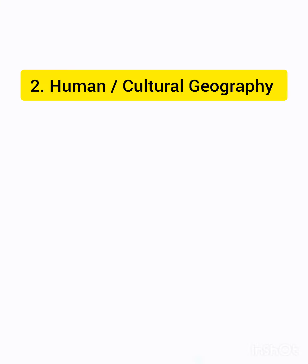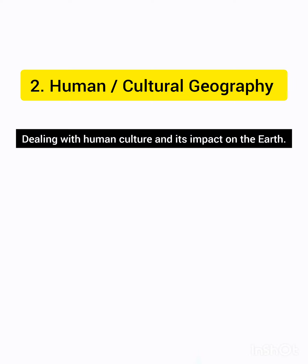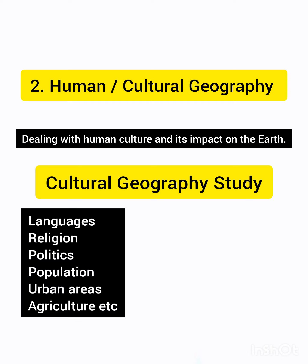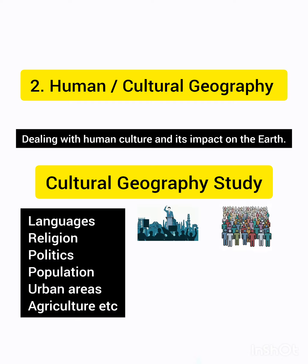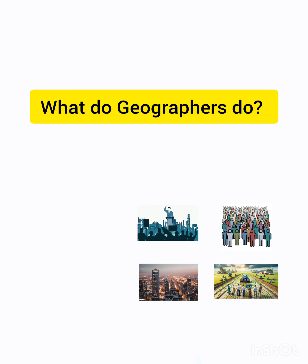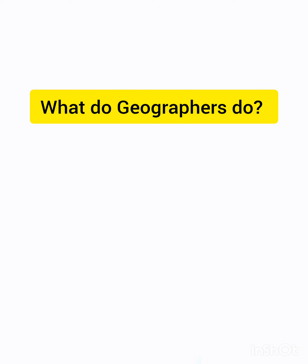The second branch of geography is known as human geography or cultural geography. It is the branch dealing with human culture and its impact on the earth. Cultural geography studies languages, religion, politics, population, urban areas, agriculture, and more. What do geographers do?